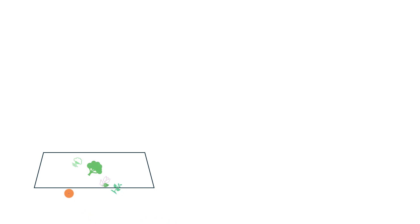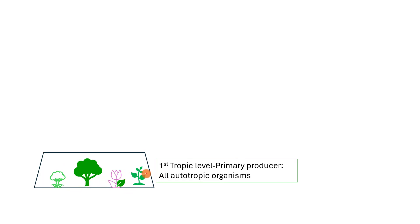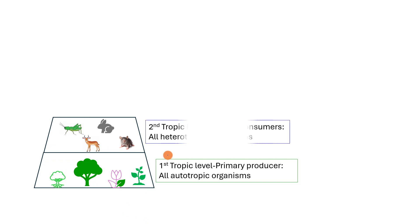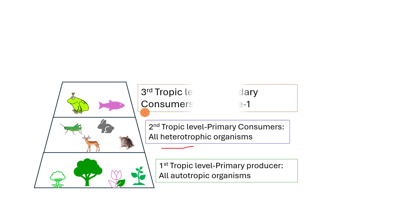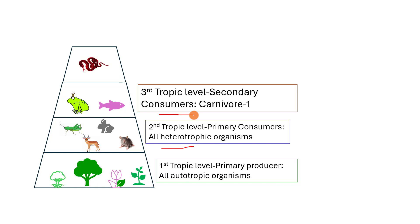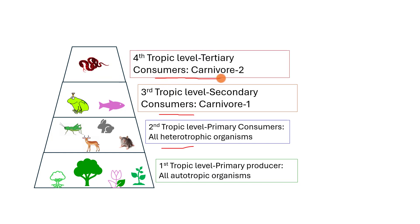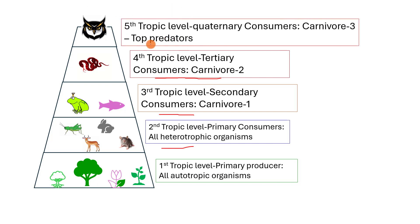Now let us summarize. All autotrophic organisms are at the first trophic level, known as the primary producer. All herbivores are in the second trophic level, also known as the primary consumer. The third trophic level is occupied by consumers that feed on the herbivores — labeled as secondary consumers or carnivore level 1. The fourth level is called the tertiary consumer or carnivore level 2. There may be a fifth level as well, called quaternary consumers, at the top of the trophic level.